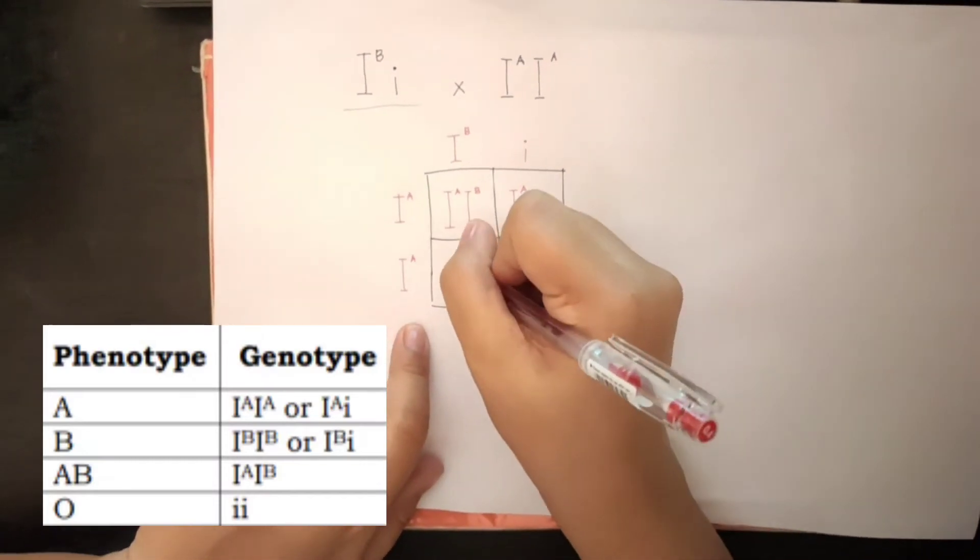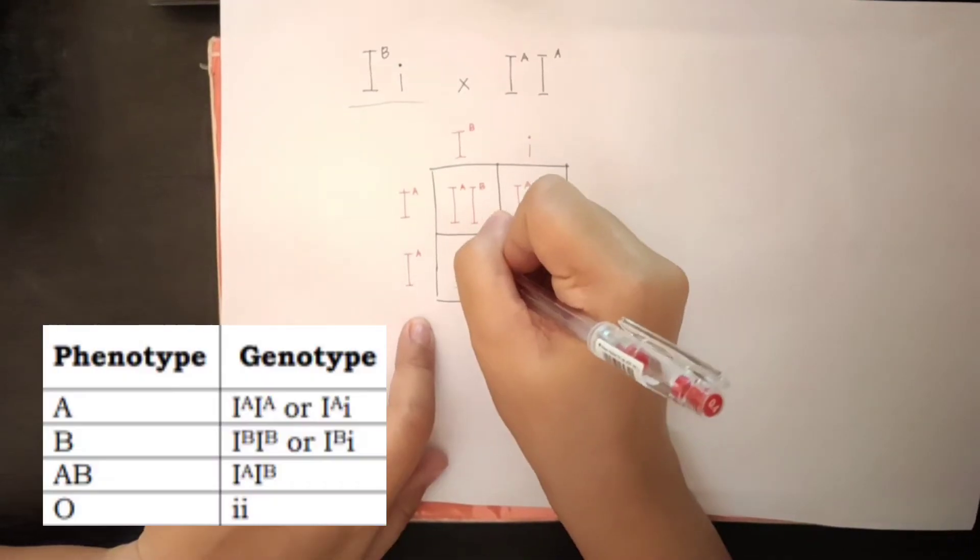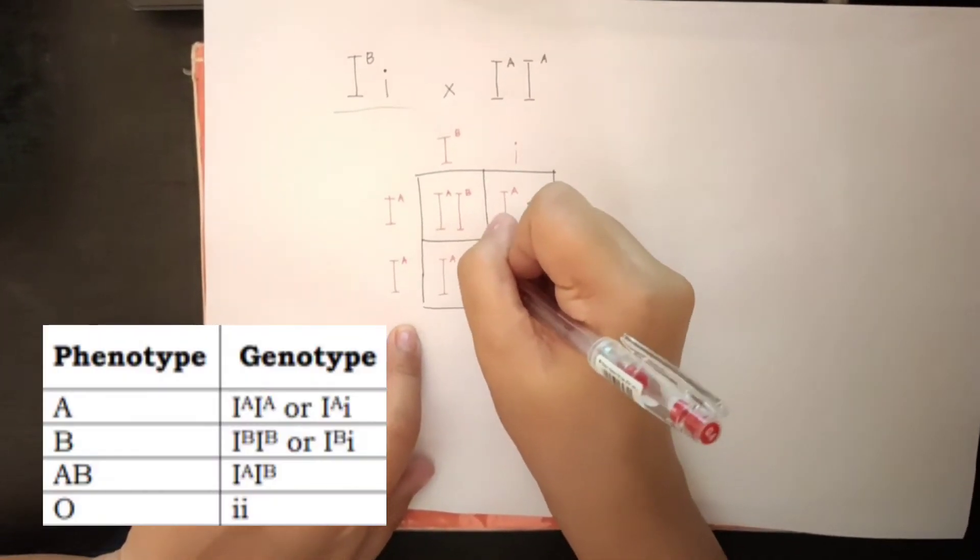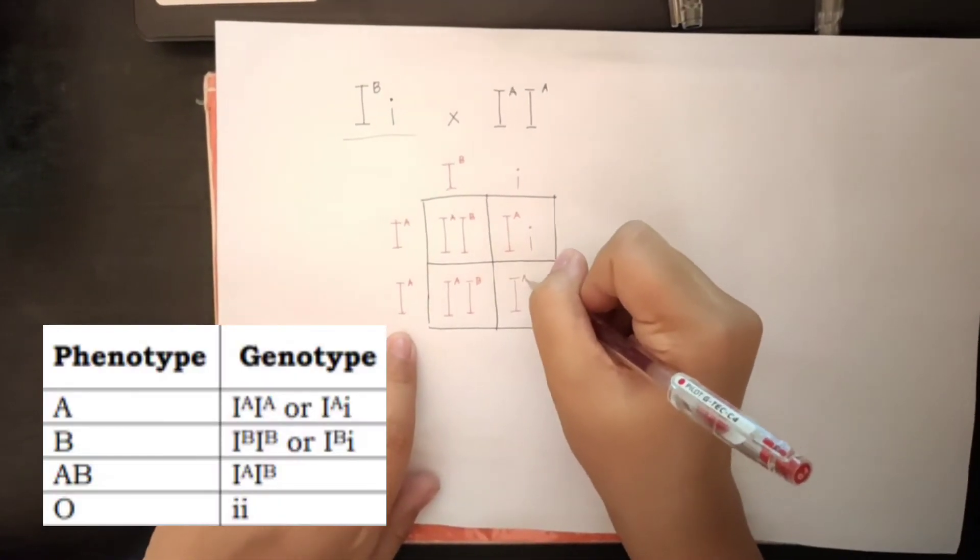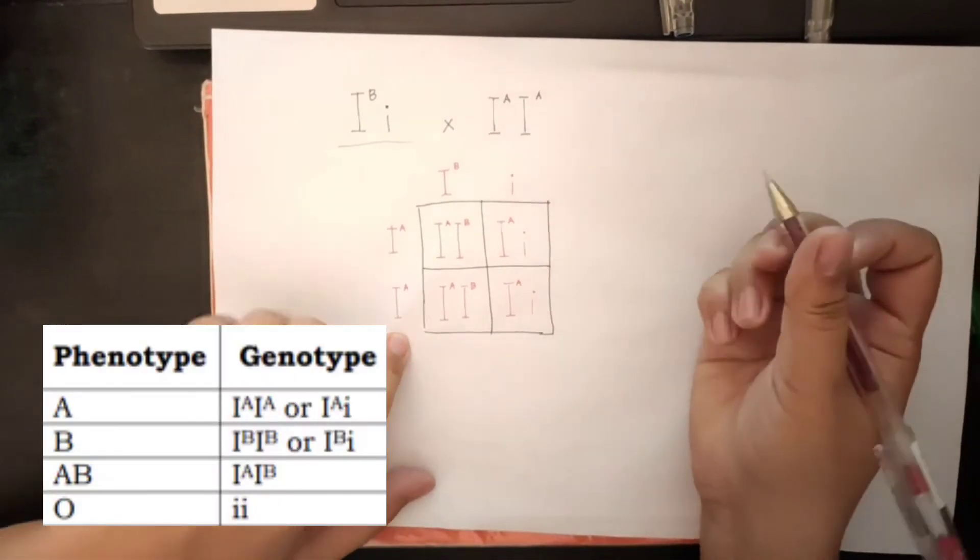And this one, okay, proceed to the next. A and B. And then this one. And i. Now, we are done with the Punnett square.